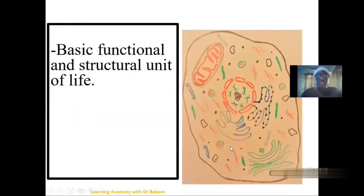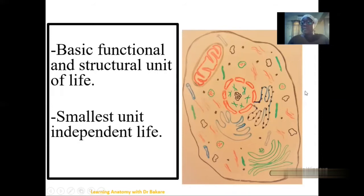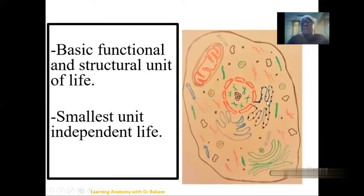The cell is the basic structural and functional unit of life. The cell is capable of living an independent life, which means that within the cell we have different organelles that are capable of performing different functions, just as we have the digestive system and the respiratory system in the human body. These organelles perform the different functions needed for the cell to sustain living.